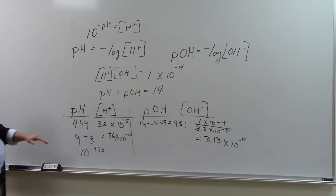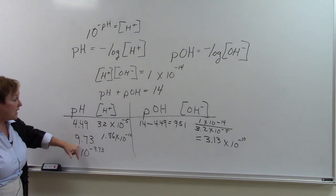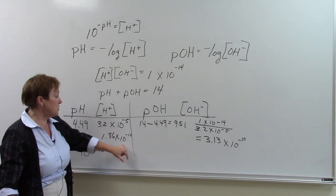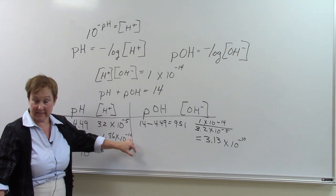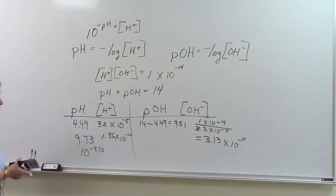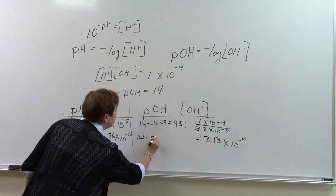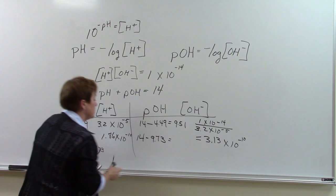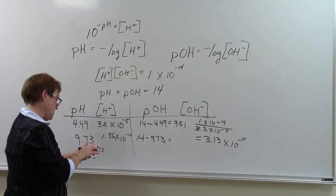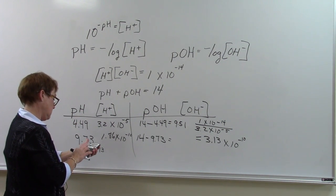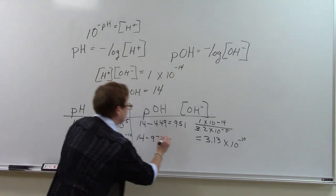Does that make sense? Yes, it does make sense, because this is a basic pH, and so this concentration is less than 10 to the minus 7th, which would be neutral. Once again, the pOH is simply 14 minus 9.73, which is going to be 4.27.